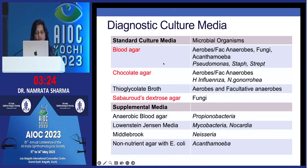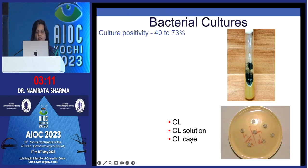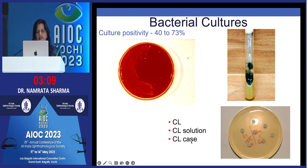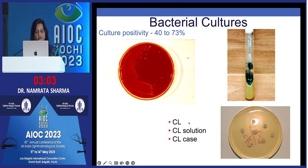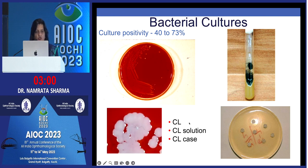Cultures are classically sent for blood agar, chocolate agar, and Sabouraud's dextrose agar. In recalcitrant keratitis, send for anaerobic blood agar, LJ media, and non-nutrient agar with E. coli. Culture positivity for bacteria is 40 to 73%. Everything associated — contact lens, contact lens solution, case, and suture — should also be sent for culture and sensitivity.